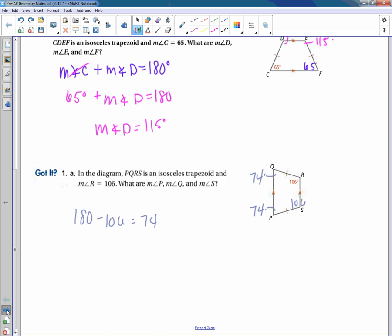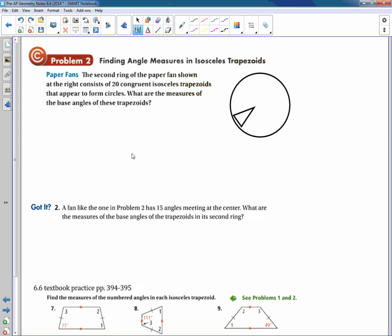Okay, so let's turn and do a story problem or a real-world problem using these same information. Okay, if we look at this paper fan, it says that the second ring of the paper fan shown at the right, which we actually don't have a picture, but I've sketched it out for you, consists of 20 congruent isosceles trapezoids that appear to form circles. What are the measures of the base angles of these trapezoids? So we want to pretend that if we actually had a line that cut this triangle right here, that it would create this trapezoid here at the bottom. Okay, and it tells us that we have 20 of them.